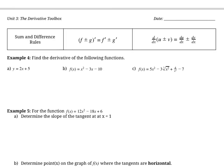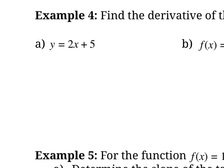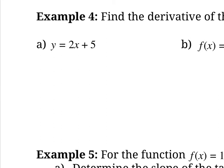The next rule is the sum and difference rules. Essentially, if we have two functions f and g being added or subtracted, we can take the derivative of them separately. For question a, y prime equals the derivative of 2x plus the derivative of 5. The derivative of 2x — treating it as 2x to the 1 — gives just 2, and the derivative of 5 is 0 since it's a constant. So y prime equals 2, which makes sense because the slope of this linear equation is 2.